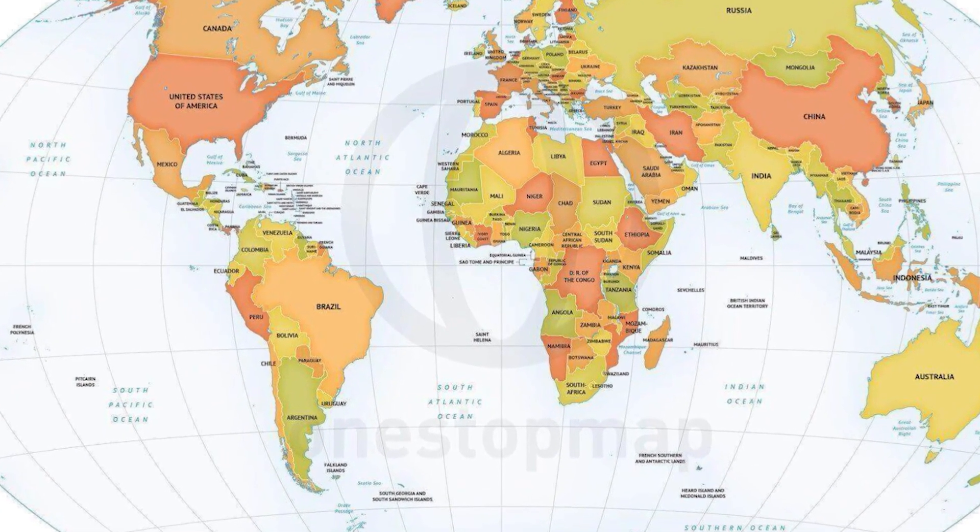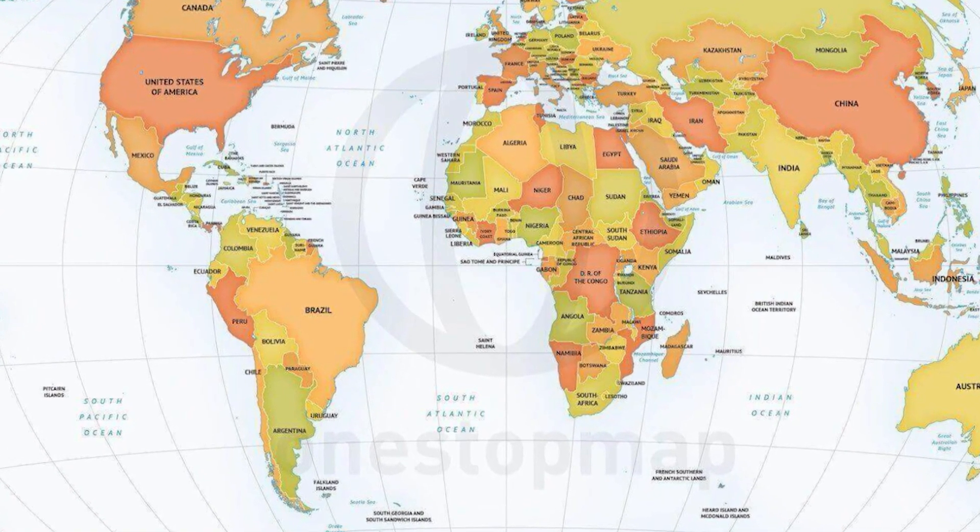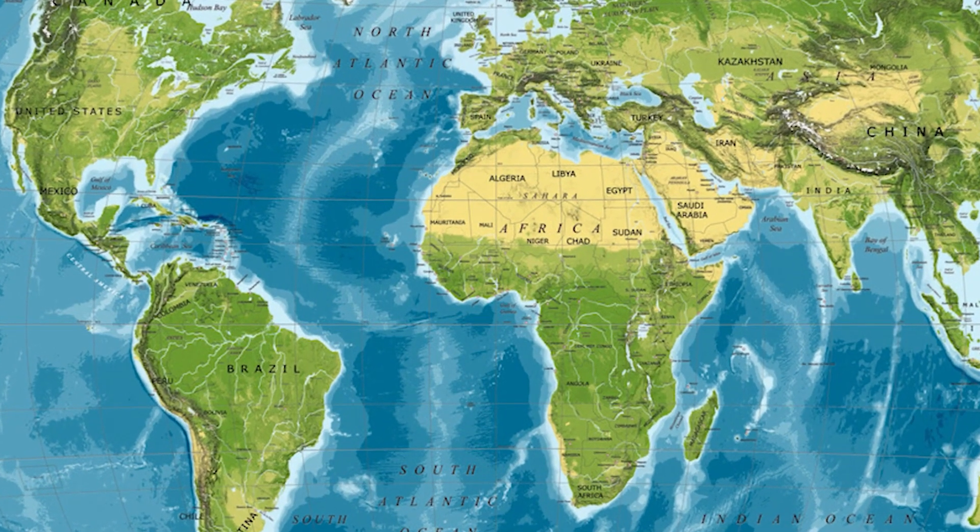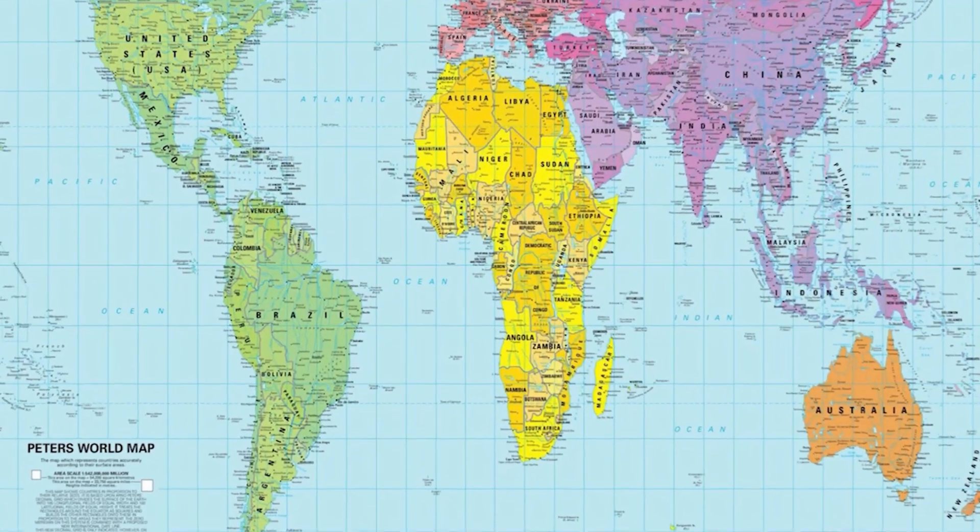However, according to Live Science, this picture has issues with distortion, particularly regarding the Pacific Ocean, which looks vaster on this map than it is in reality.